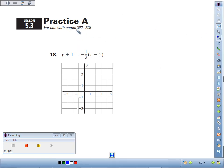18, we're going to graph this point-slope equation. Remember, point-slope is y minus your y-coordinate equals slope times x minus your x-coordinate.